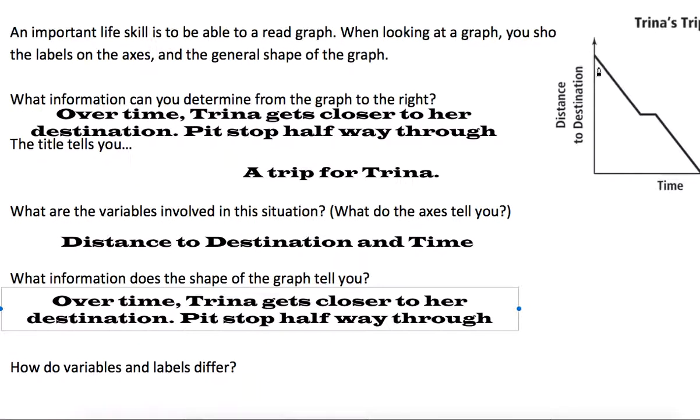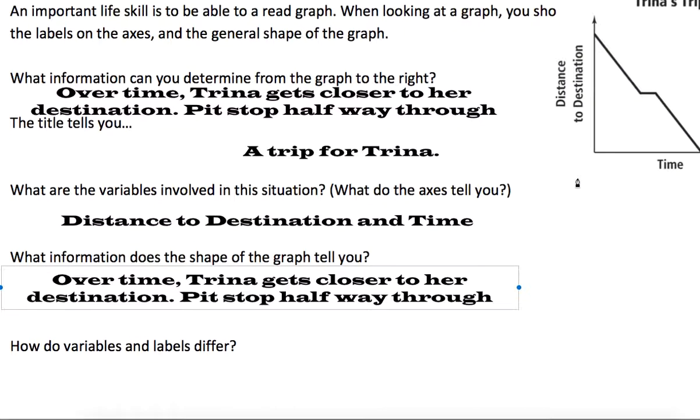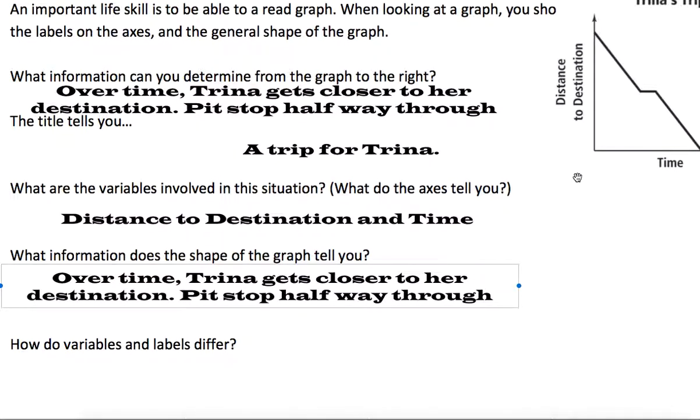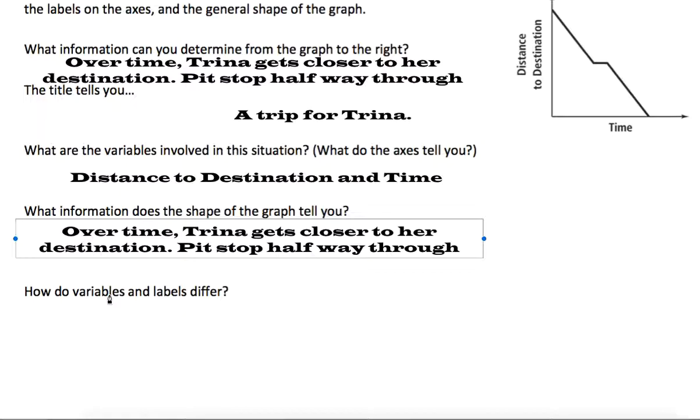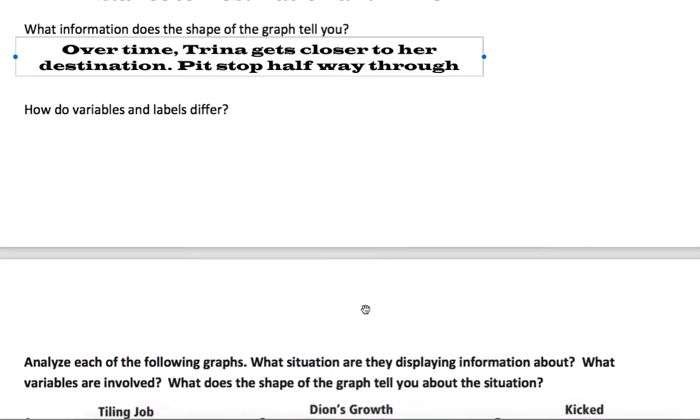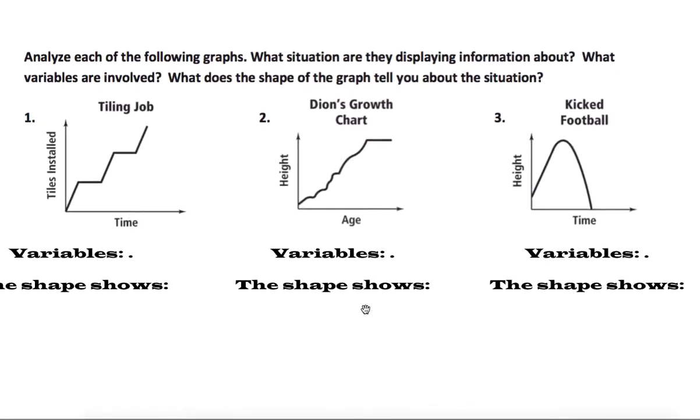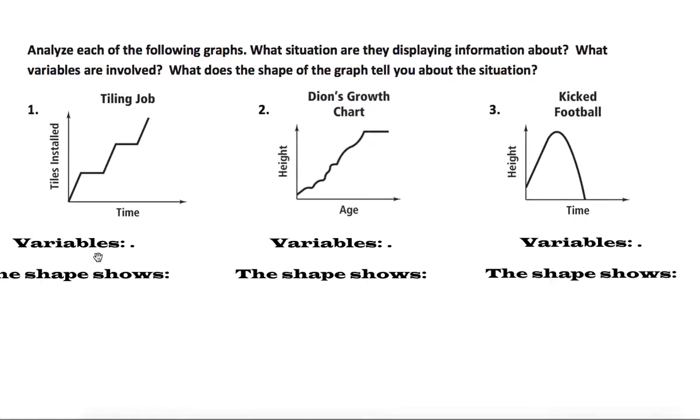Ideally, as time goes on, the distance that it takes to go to the destination gets smaller and smaller. She gets closer and closer even if she does take that break. The variables and the labels differ because time keeps going, but the distance might not just continuously be going at this pace. We could say the variables and the labels differ because time is a different increment in comparison to distance, kind of like apples and oranges, they're not the same.